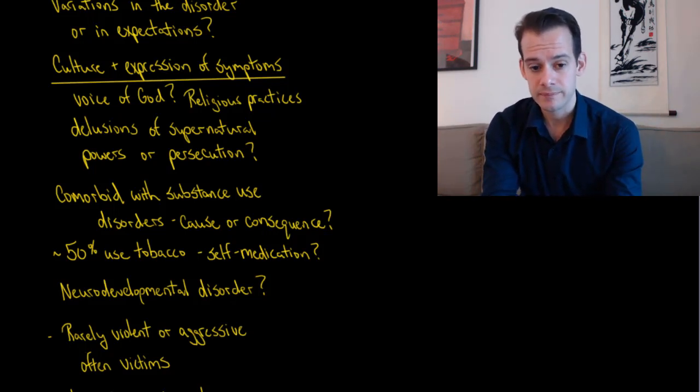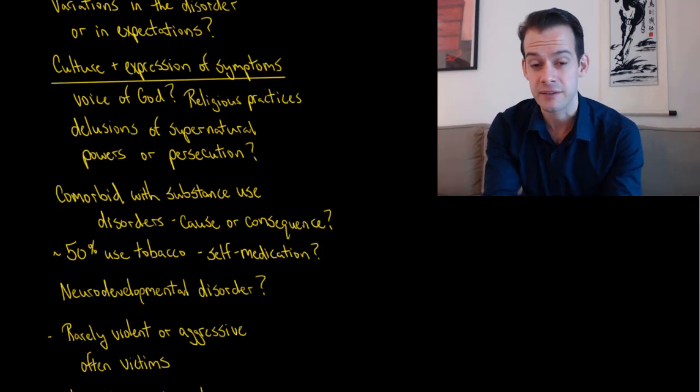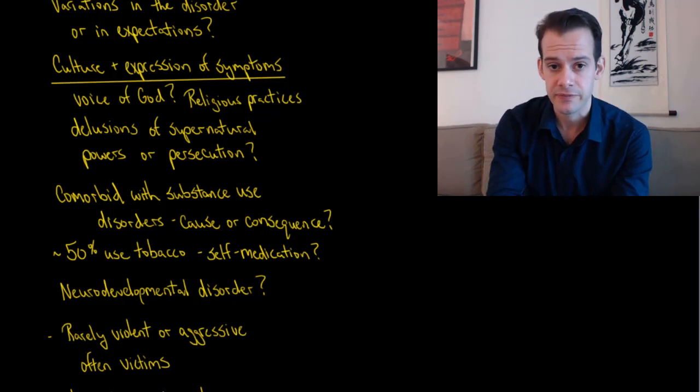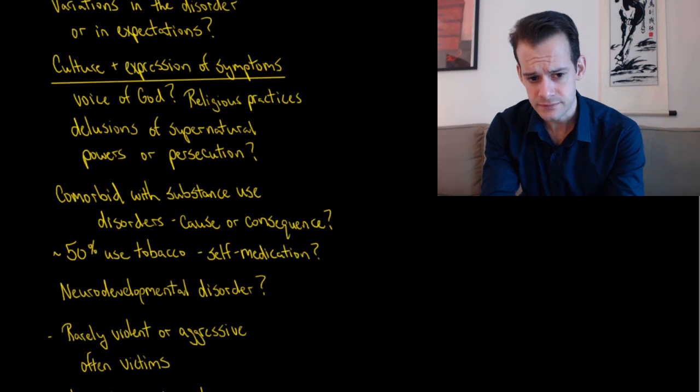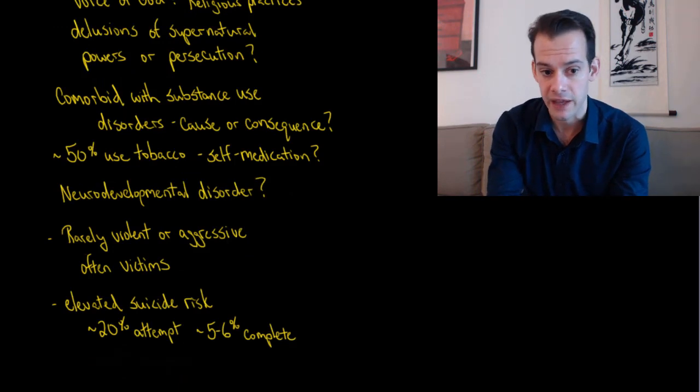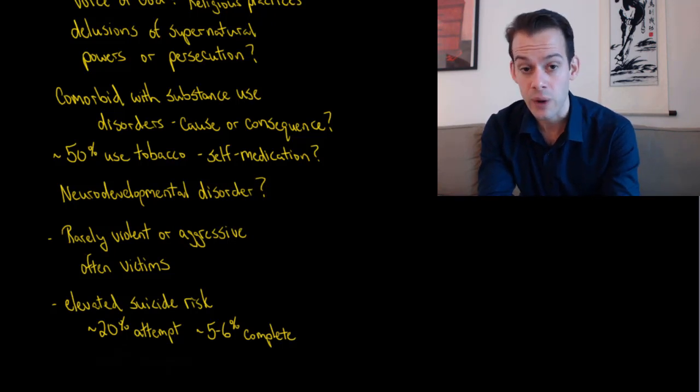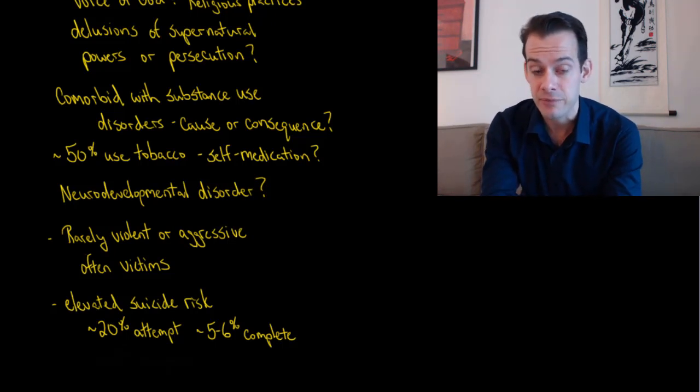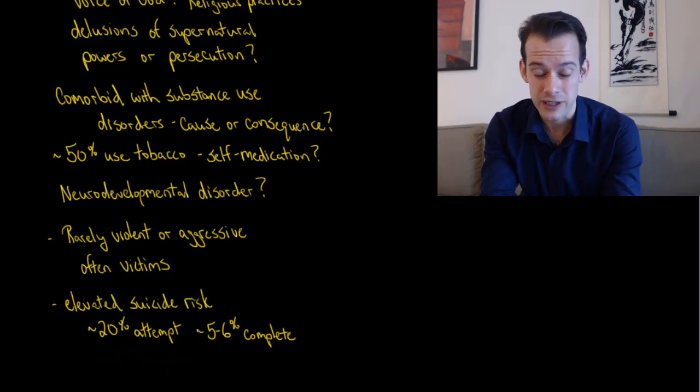There's a common misconception that people suffering from schizophrenia are likely to be violent or aggressive. This is generally not the case. They're rarely violent or aggressive and they're more likely to be the victims of abuse or victims of violence rather than the perpetrators. When it comes to inflicting harm they're more likely to inflict harm on themselves rather than other people. This is related to the idea that schizophrenia comes with an elevated risk of suicide. Approximately 20% of patients diagnosed with schizophrenia will attempt suicide at least once, often related to some hallucinations, and about 5 to 6% of those patients will successfully complete their suicide.